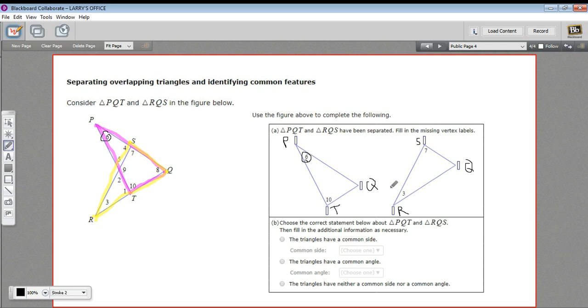Do they have a common angle? Well, it might be useful to fill in the rest of this diagram. Here's 6 and 10, and 7 and 3 - nothing common there. But if we wanted to find this angle at Q - aha, that's 8 and that's 8! So there you go, they do have a common angle at vertex Q, and the common angle is angle 8.